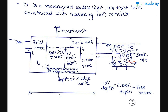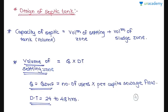The effluent exits through the outlet zone and is passed to a soak pit. Effective depth equals overall depth minus freeboard, giving us the liquid depth. The depth of the sludge zone and the total length L are also marked. Based on these components, we will now look at the design of a septic tank.